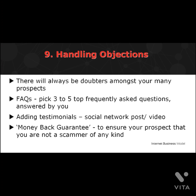The solution to objections is to identify the top 10 or 20 questions you think your customers will ask and address them in your copywriting — we call this the FAQ or frequently asked questions. Write those questions down and start answering them. Pick the top three to five frequently asked questions and put them right after your solution. Additionally, you can add testimonials from your past and active customers, in the form of a social network post or a video testimonial.